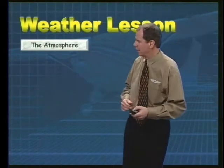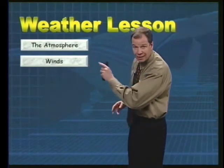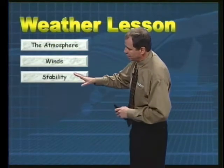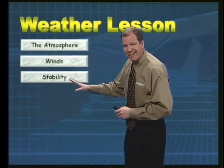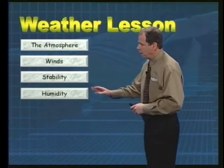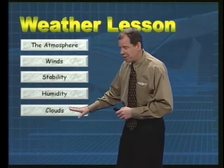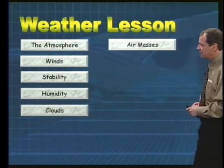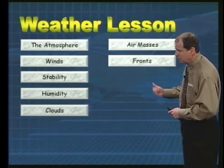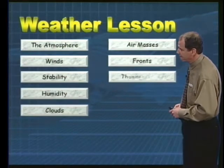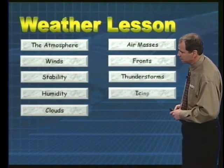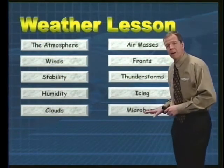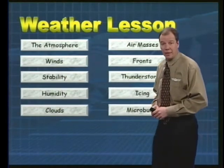Here are our lessons for this segment. First up, the atmosphere — what is the atmosphere, the percentage of gases like oxygen and nitrogen. Winds, both at the surface and aloft. Stability of the atmosphere — what does this mean, what is a stable atmosphere? Humidity, clouds and cloud identification, air masses, fronts including cold front, warm front, and occluded. Thunderstorms, icing, and last but never least, microbursts and how they affect you and how to look out for them.